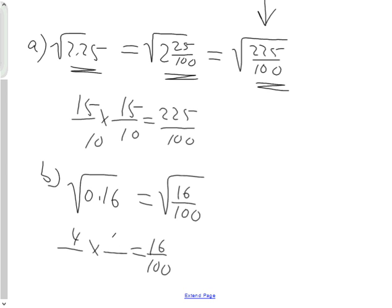The numerator will be 4. The denominator will be 10. So therefore, 4 tenths is the square root.